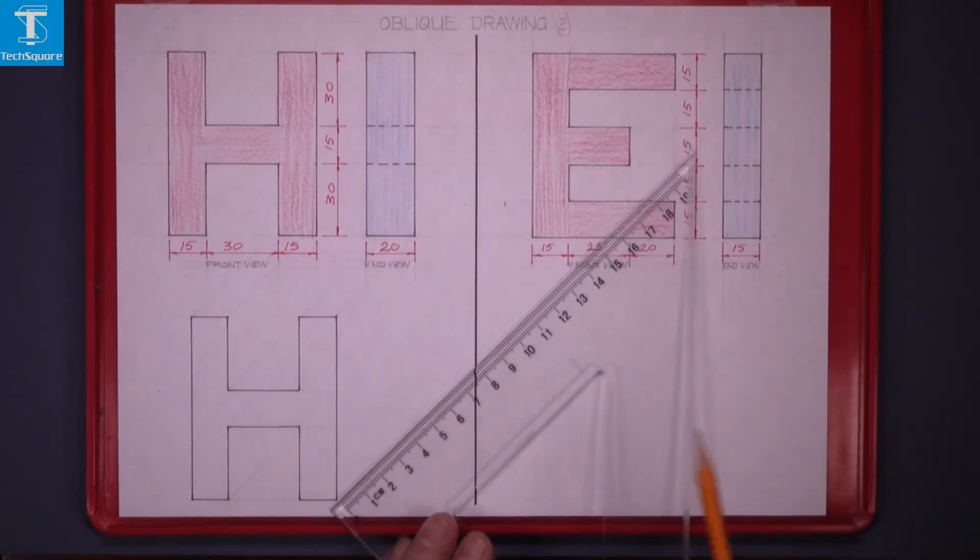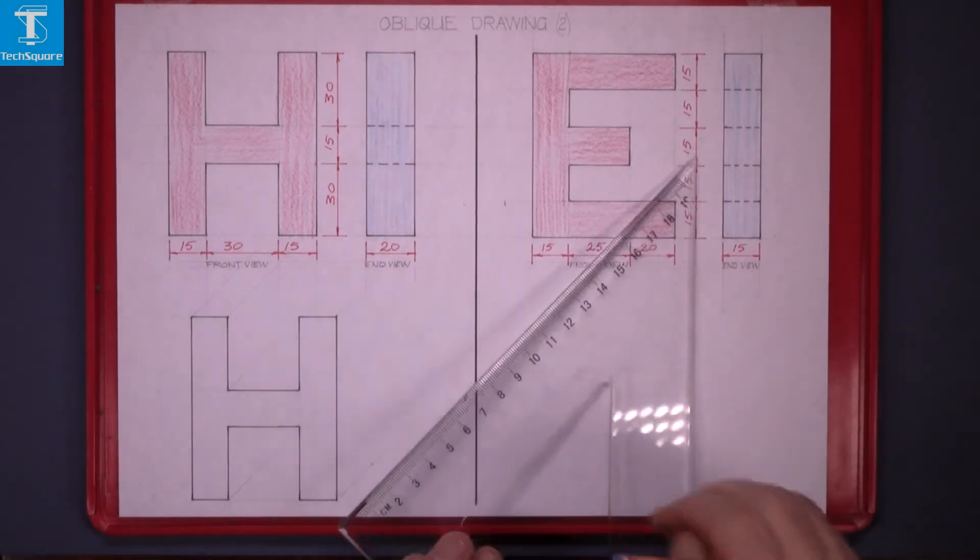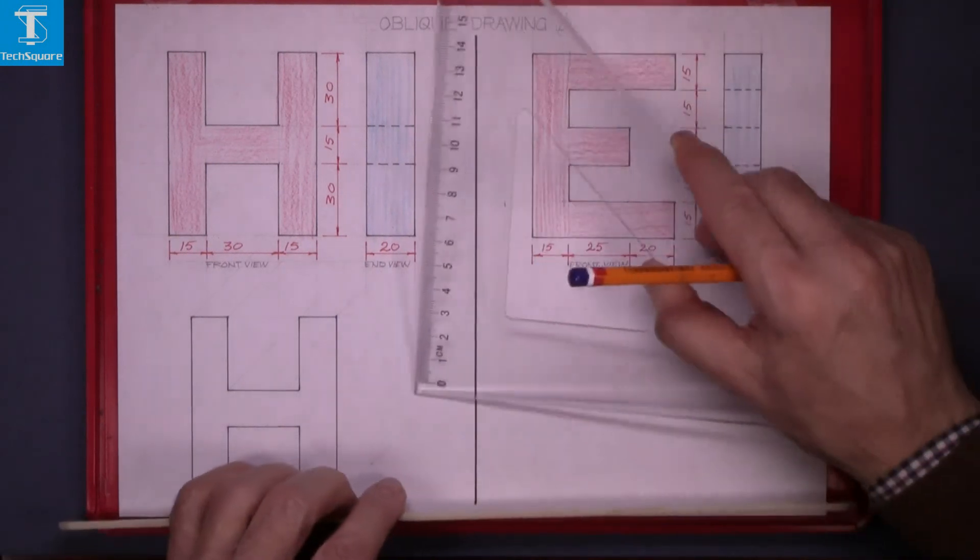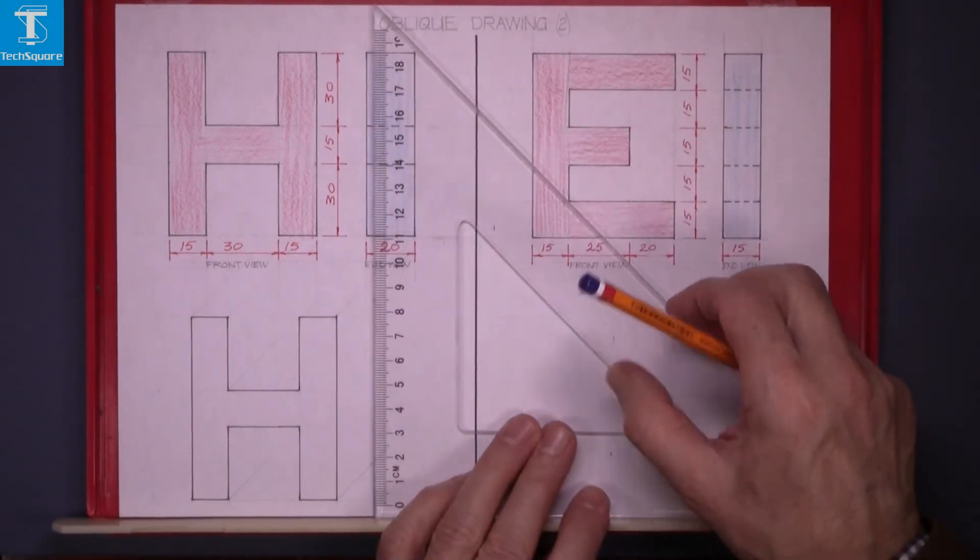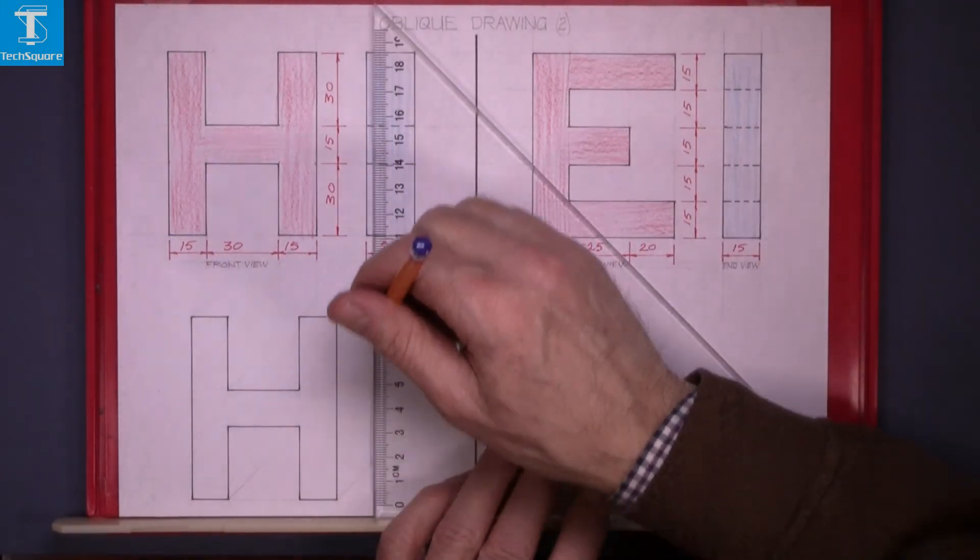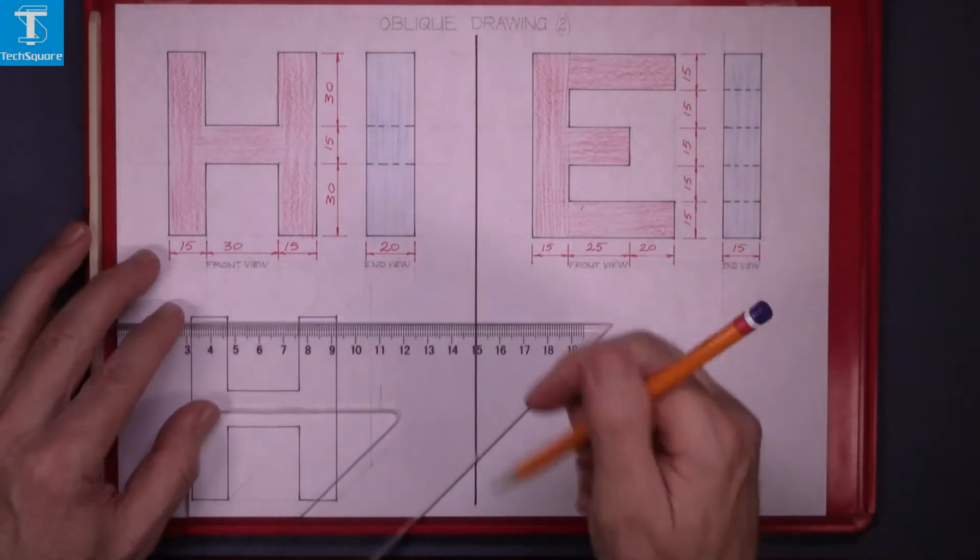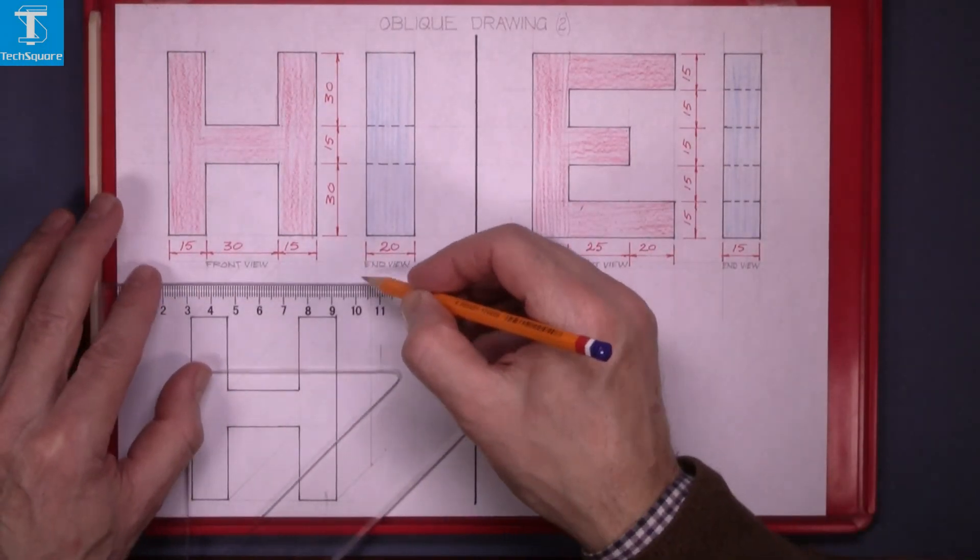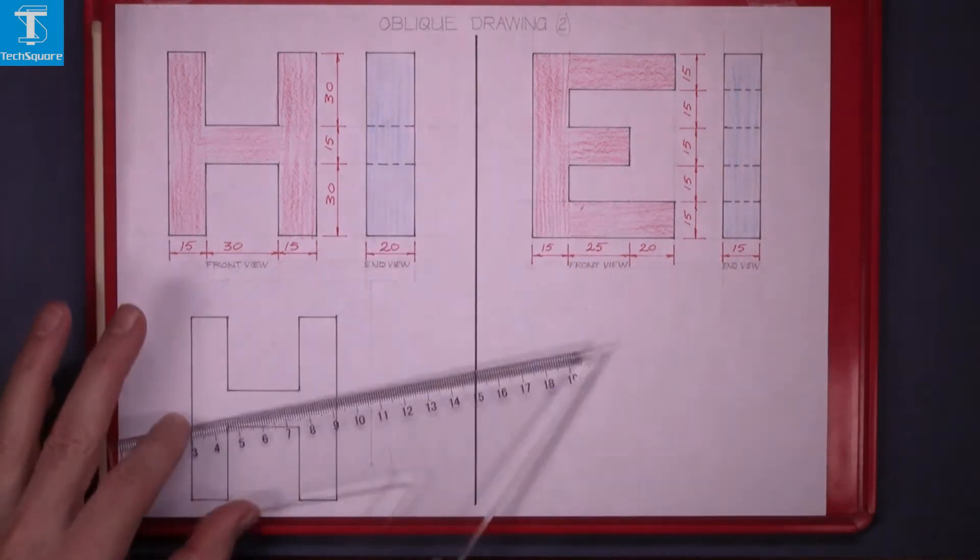The thickness is 20. Measure back your 20 millimetres and then draw your line which represents the back of the letter H up to the very top and across the top to get the far leg of the H there.